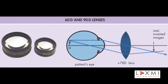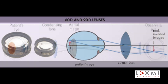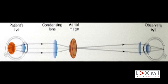In this video, we will discuss the slit lamp biomicroscopic examination of fundus using the principle of indirect ophthalmoscopy. The principle is to make the eye highly myopic by placing a strong convex lens in front of the patient's eye, so that the emergent rays from an area of the fundus are brought to focus as a real inverted image between the lens and the observer's eye.